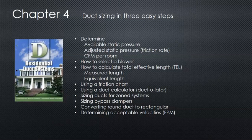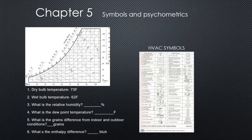Chapter four will teach you how to size ducts in three easy steps. You'll determine the available static pressure for building a duct system, the adjusted static pressure — which is also called the friction rate — and calculate the CFM per room. You will size ducts using both a friction chart and a duct calculator, and finally you'll learn to determine acceptable air velocities within the duct.